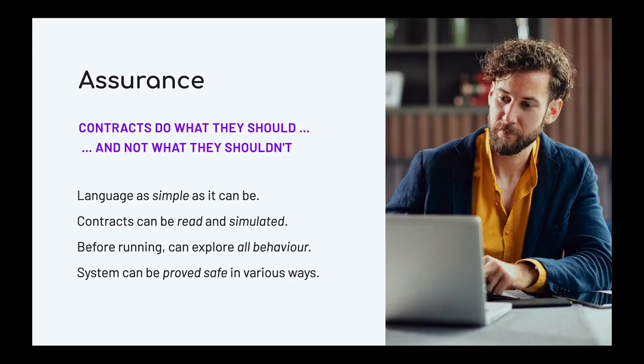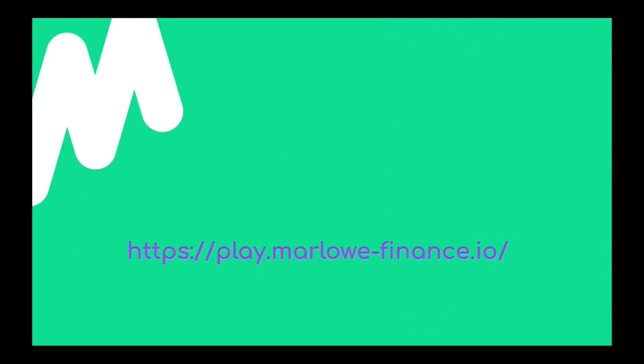So just to summarize, what we have in Marlowe is a DSL — a special purpose language for financial contracts running on top of Plutus. Because it's a DSL, it gives us assurance that's harder to give for a general purpose language. It allows us to orient the design around users as well as developers, and gives us assurance of what contracts do and don't do. The language is simple, giving us readability, simulatability, and stronger assurances of static analysis and verification. Thanks very much for listening.